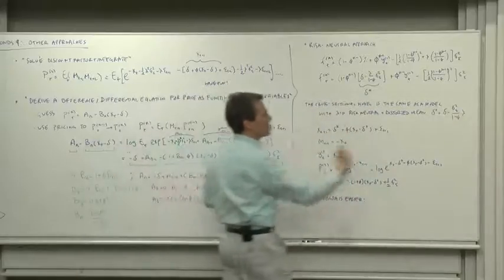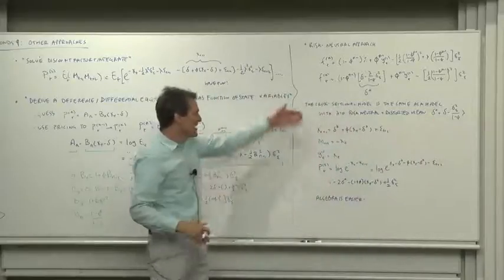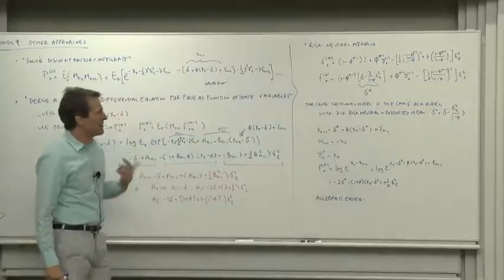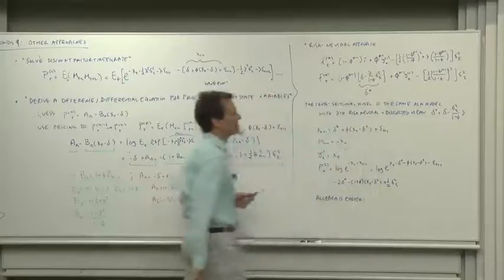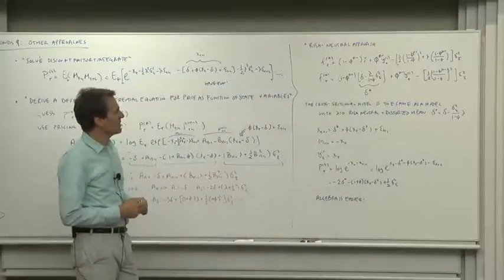Now if you put that delta star in and lambda equals zero, the algebra is quicker. I just went through the algebra here for the two-period bond. It makes the algebra easier to fold those things into delta star because then you don't have any market prices of risk left in your models.